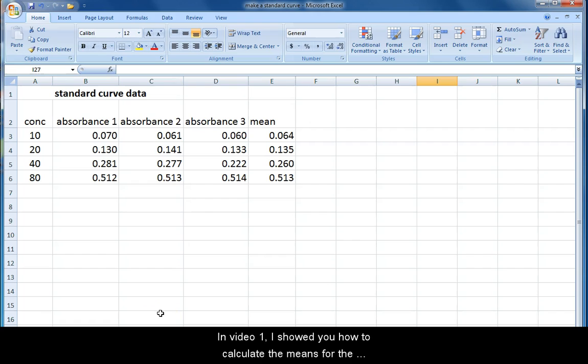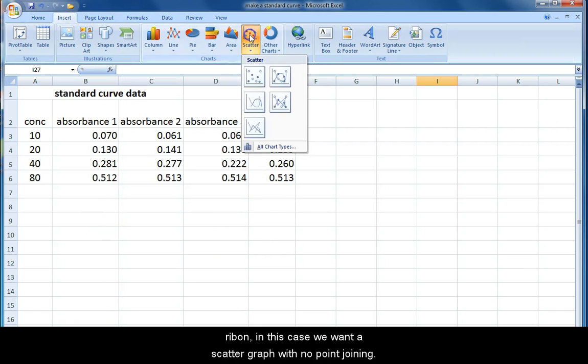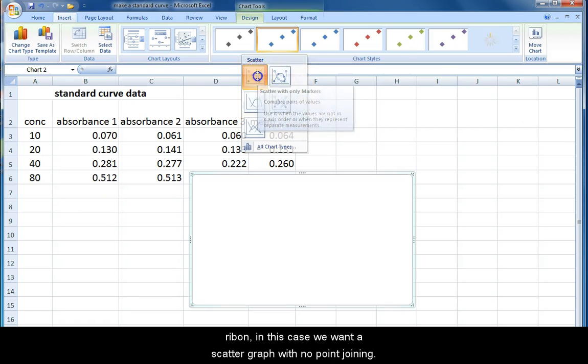In video one I showed you how to calculate the means for three absorbance values. Now we will make the standard curve. Start by selecting the type of chart you want from the insert ribbon. In this case we want a scatter graph with no point joining.